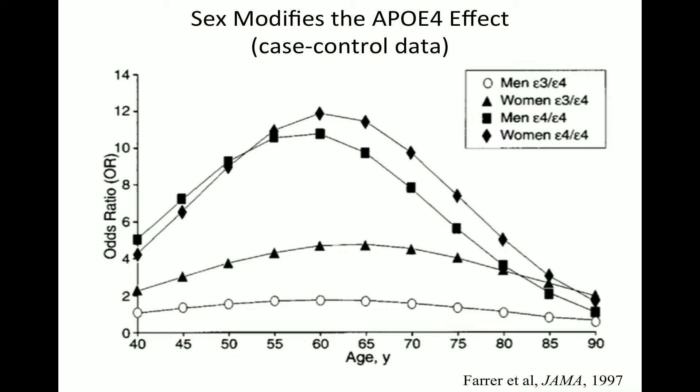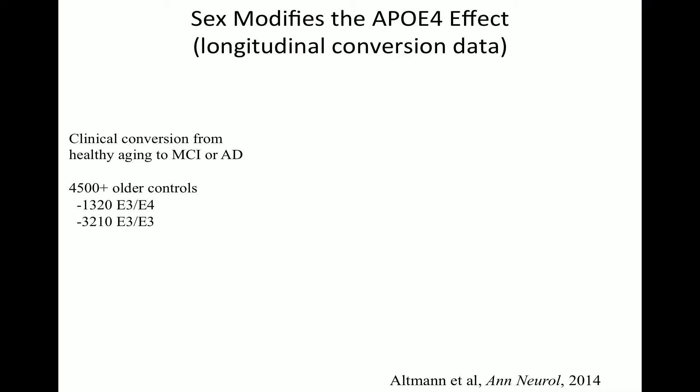I'd never seen these data before and was wondering why this paper didn't get discussed more. We wanted to look at this using data we had access to. We took a large dataset from the National Alzheimer's Coordinating Center, or NACC. These are data from all the Alzheimer's research centers, which fill out uniform assessments and contribute to NACC. We wrote a proposal to look at about 4,500 older controls and their change in cognition over time. The question: do we see a differential effect of APOE4 in men versus women in the risk of converting from healthy aging to mild cognitive impairment or Alzheimer's disease?